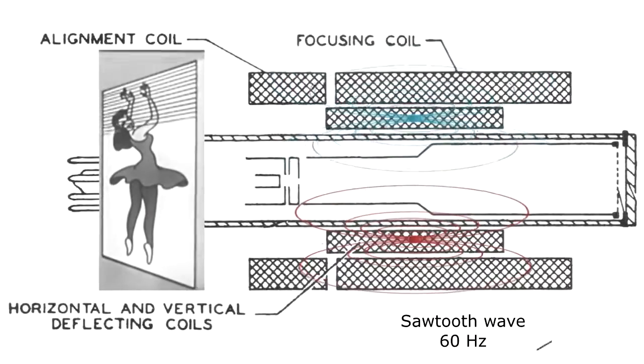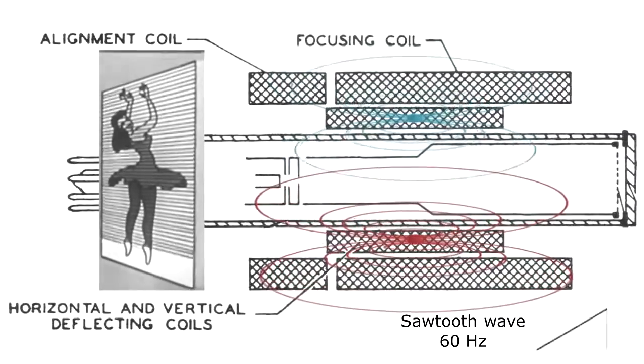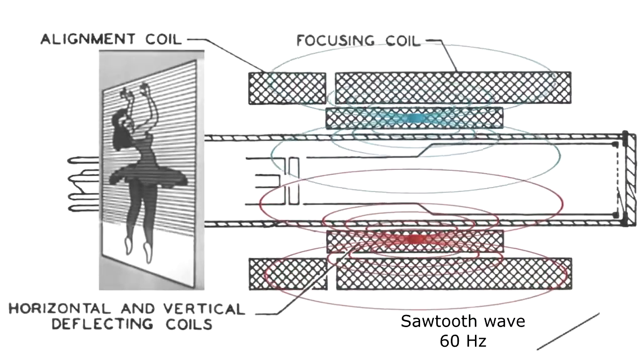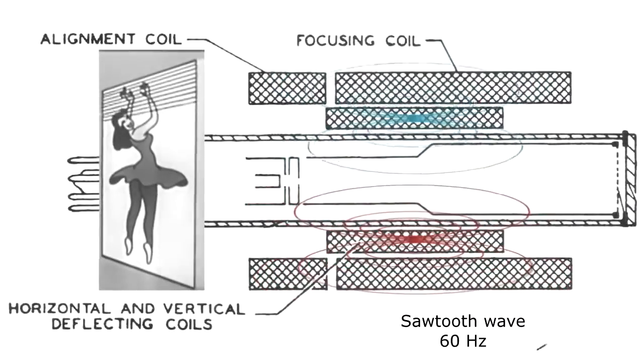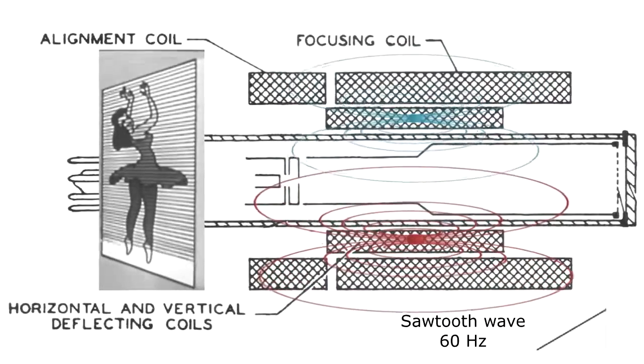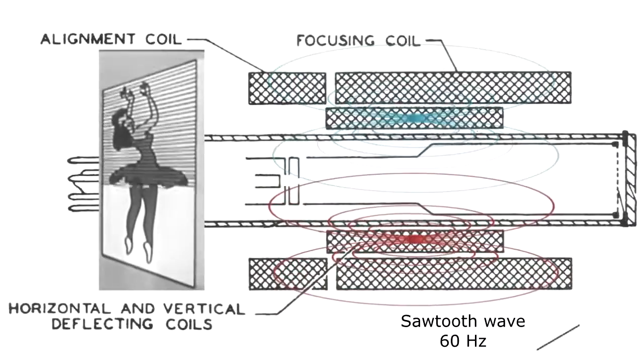Meanwhile, a second set of coils was fed with another sawtooth wave, with a frequency of only 60 hertz. That forced the electron beam to travel from the top of the screen to the bottom, 60 times a second. So now we had a fluctuating voltage representing all the lightness and darkness in a scene, and the scanning process was repeated over and over 30 times a second.